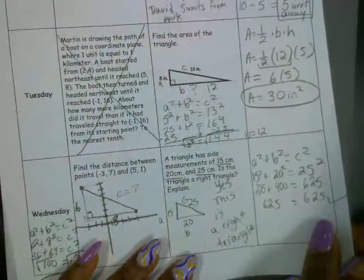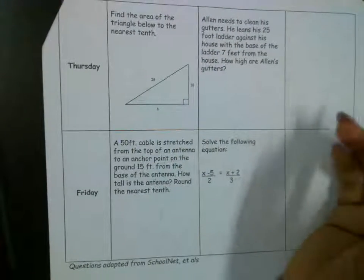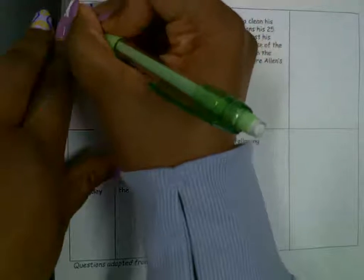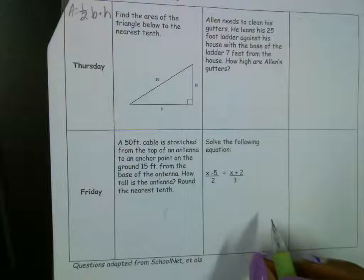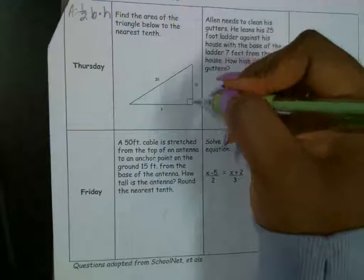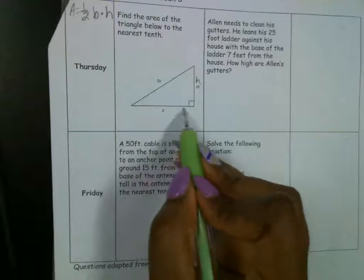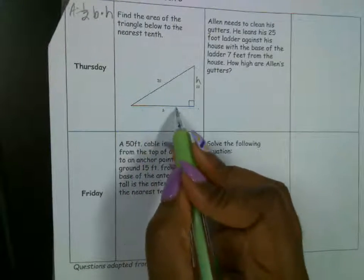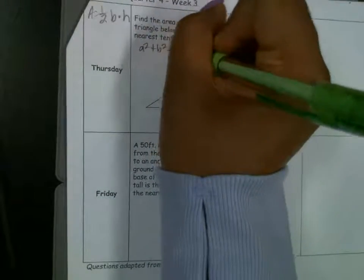The warm-up says find the area of a triangle. The formula for area of a triangle is one-half base times height. The height is 10 — that's how tall it is. The base we don't know yet, so we have to find it. What can we use to find this length? Pythagorean theorem. Pythagorean theorem is A squared plus B squared equals C squared.